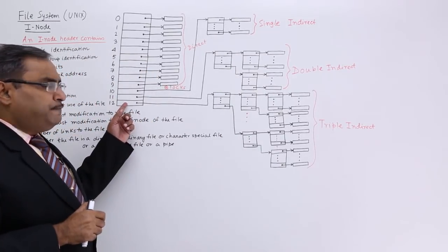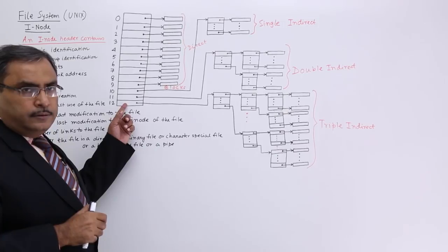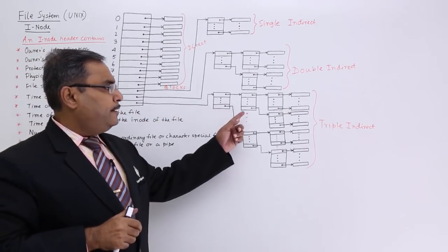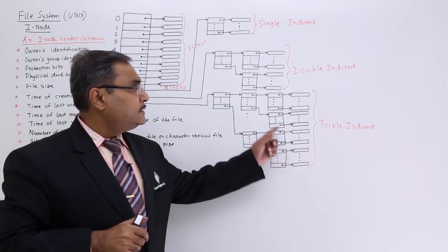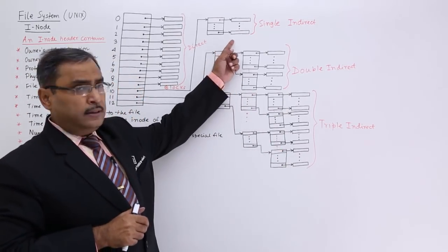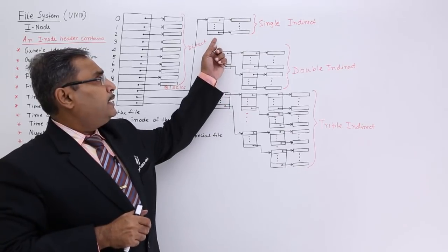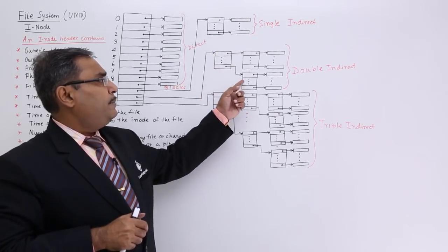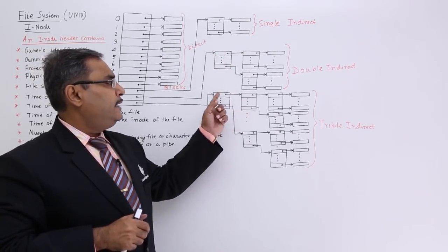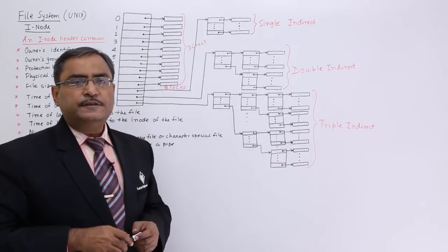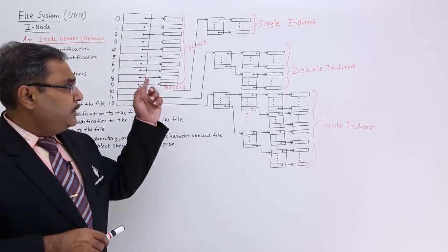Field 13 contains the triple indirect block address — one level of indexing for single indirect, two levels for double indirect, and three levels for triple indirect, after which we reach the physical data blocks.